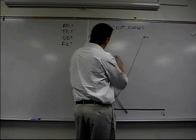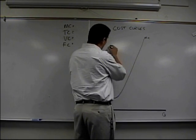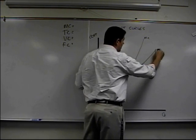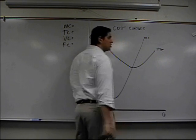When marginal is below the average, it pulls the average down. So this is average total cost. And when marginal is above the average, it pulls the average back up again. So this is average total cost.